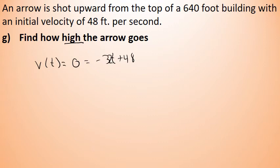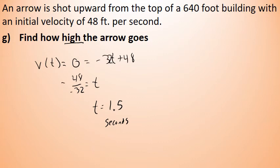Setting negative 32t plus 48 equal to zero, we find that t equals negative 48 divided by negative 32, which equals 1.5 seconds. After 1.5 seconds from launch, the arrow reaches its highest point. Substituting 1.5 into the position function — s(1.5) equals negative 16 times 1.5 squared plus 48 times 1.5 plus 640 — we find that the arrow reaches a maximum height of 676 feet.